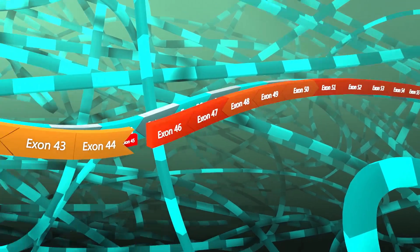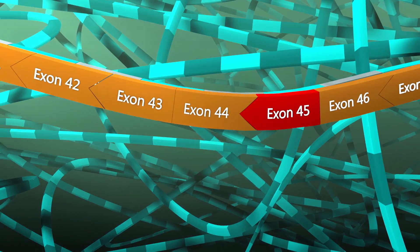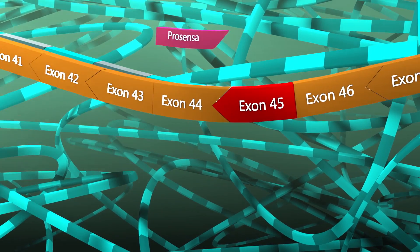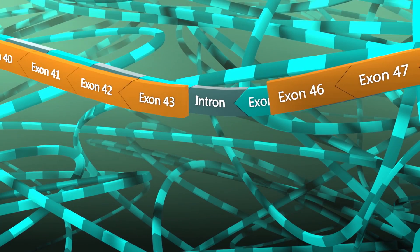In treating Duchenne muscular dystrophy, ProSensa uses antisense technology to mask an exon next to a mutated exon on pre-mRNA for the protein dystrophin.